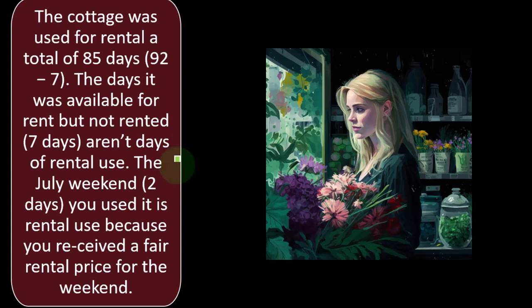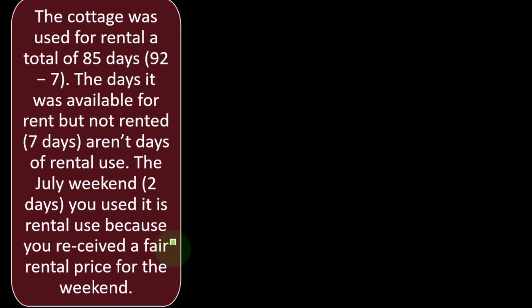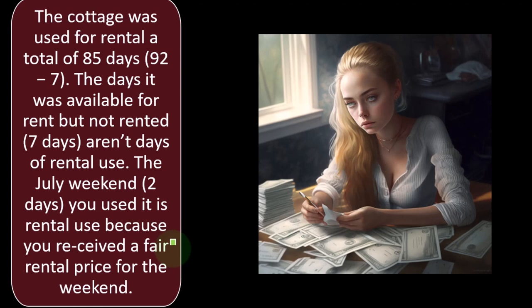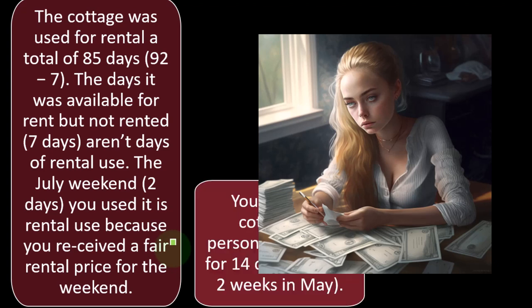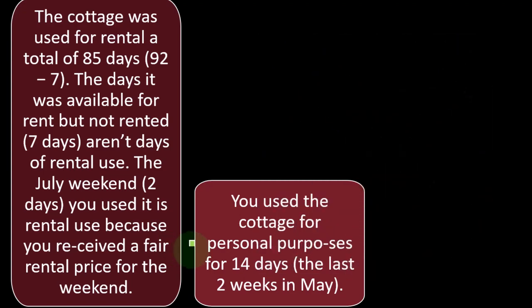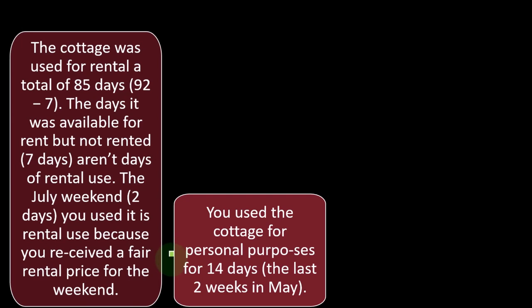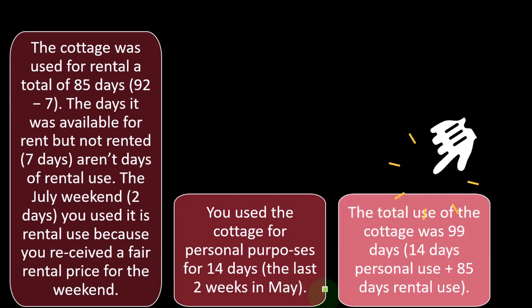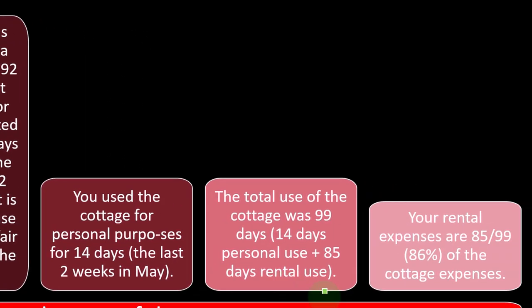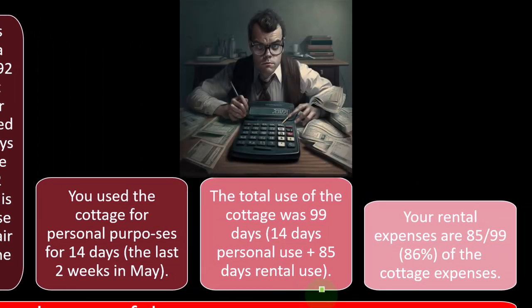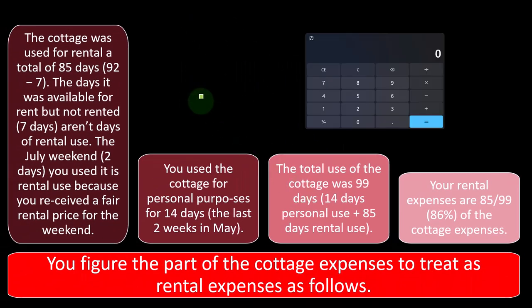The July weekend two days you used it count as rental use because you received a fair rental price. The seven days it was available but not rented are not days of rental use. So the cottage was used for rental a total of 85 days — the 92 days available minus the 7 unrented days. Personal use was 14 days. Total use of the cottage was 99 days: 14 personal plus 85 rental. Your rental expenses are therefore 85 divided by 99, or 86%.